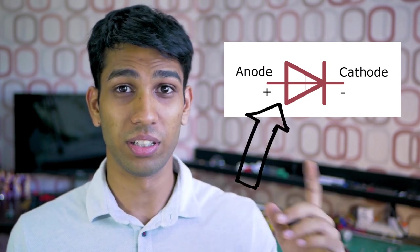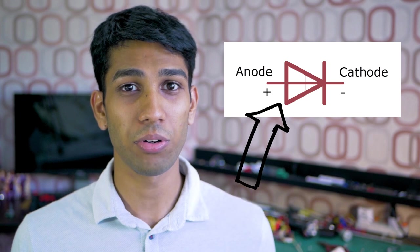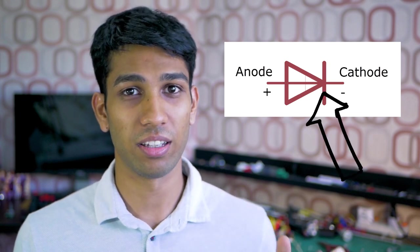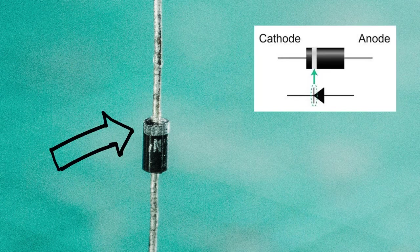The flat side of the triangle that you can see here is called the anode and the pointy side of the triangle here is called the cathode. Looking at a physical diode, we can see a white line towards one terminal of the diode. This represents the cathode.